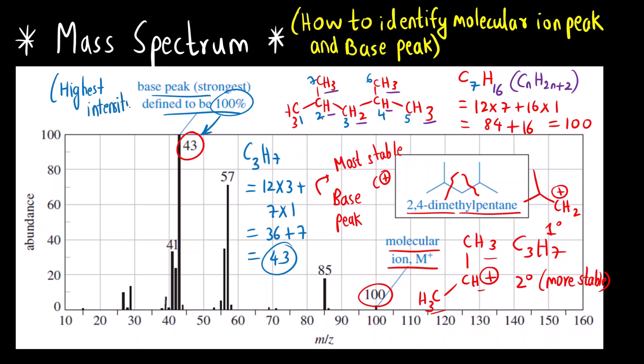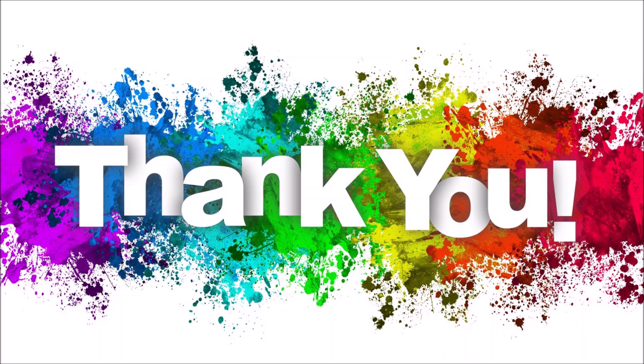I hope now you have understood how we can calculate the molecular ion peak and the base peak. You can get a question where only the mass spectrum is given and you are asked to identify the base peak and molecular ion. So here we come to the end of this video. I hope you have understood what a mass spectrum is and the different terminologies: molecular ion, radical cation, fragmentation, fragment ions, relative abundance, and m/z ratio. In the next video we will see the different techniques of fragmentation and how to identify isotopic peaks. Thank you so much.